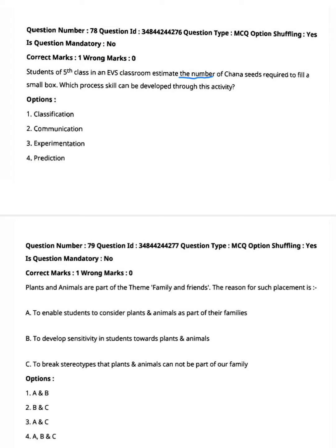This activity involves estimating the number of chana seeds required to fill a small box, which process skill is intended to be developed. Option one: classification. Option two: communication. Option three: experimentation. Option four: prediction. Option four is the right answer — prediction.